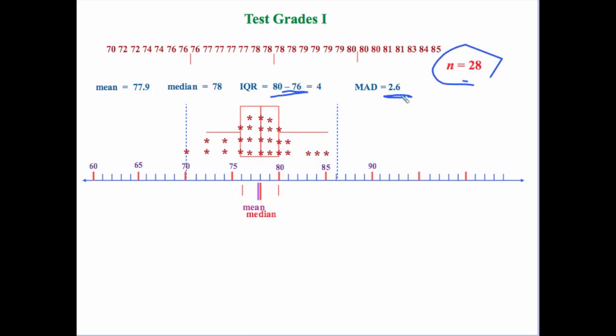Then I do my box plot and I've overlaid that with a dot plot to see the patterns as to where my values are. Notice that it's pretty condensed — it's pretty packed. The mean and the median are very close together, and my interquartile range and my mean absolute deviation values are pretty small.